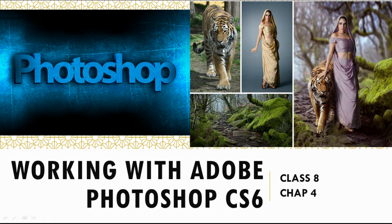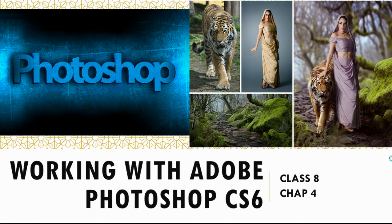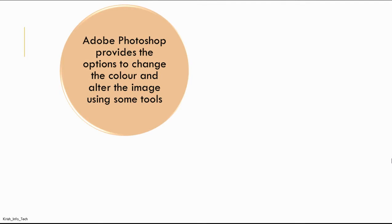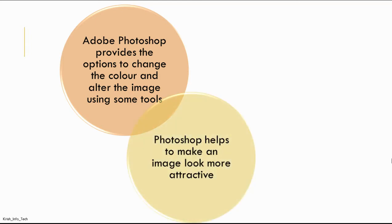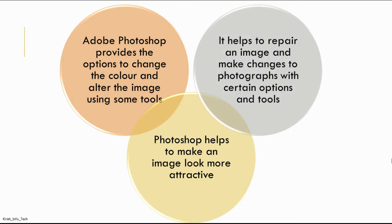We flipped this tiger's image, changed the color of the dress of this girl, and just zoomed this picture. By doing all these changes, we created this single picture. This is the major use of Photoshop, and in this chapter we are going to learn how to do all these things. Adobe Photoshop provides options to change the color and alter the image using tools, making images look more attractive, repairing images, and making changes to photographs. We are going to see a few of those tools.